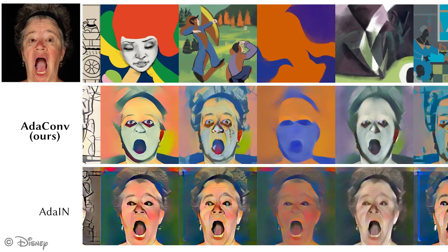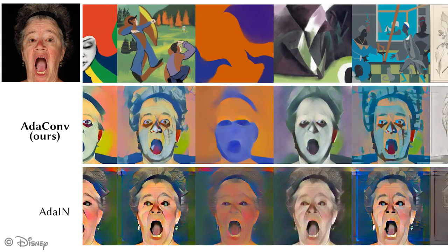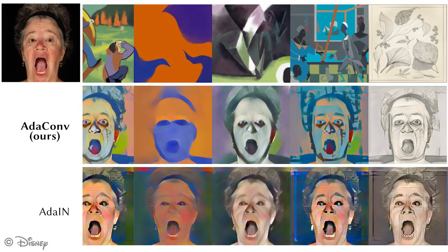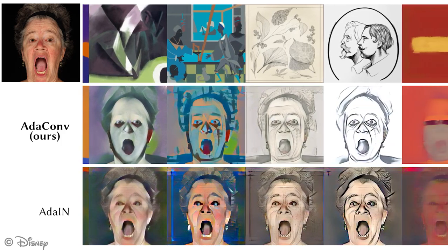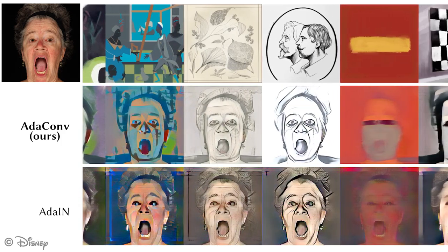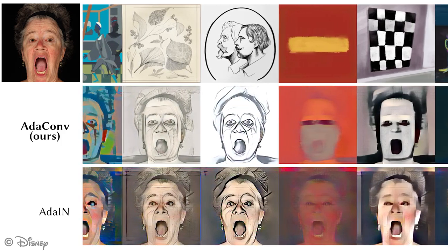Here we showcase several examples of style transfer, where our method AdaConv captures the structural aspects of the style image much better than AdaIn.